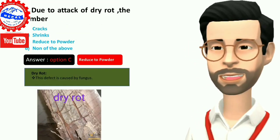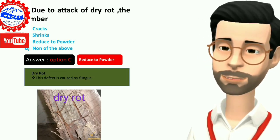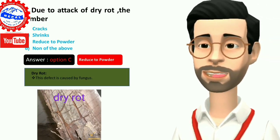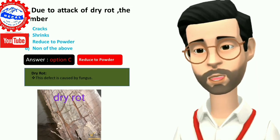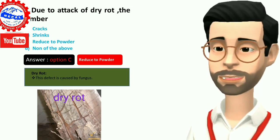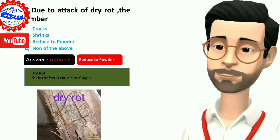Four, due to attack of dry rot the timber: A) cracks, B) shrinks, C) reduced to powder, D) none of the above. Answer is option C, reduced to powder.